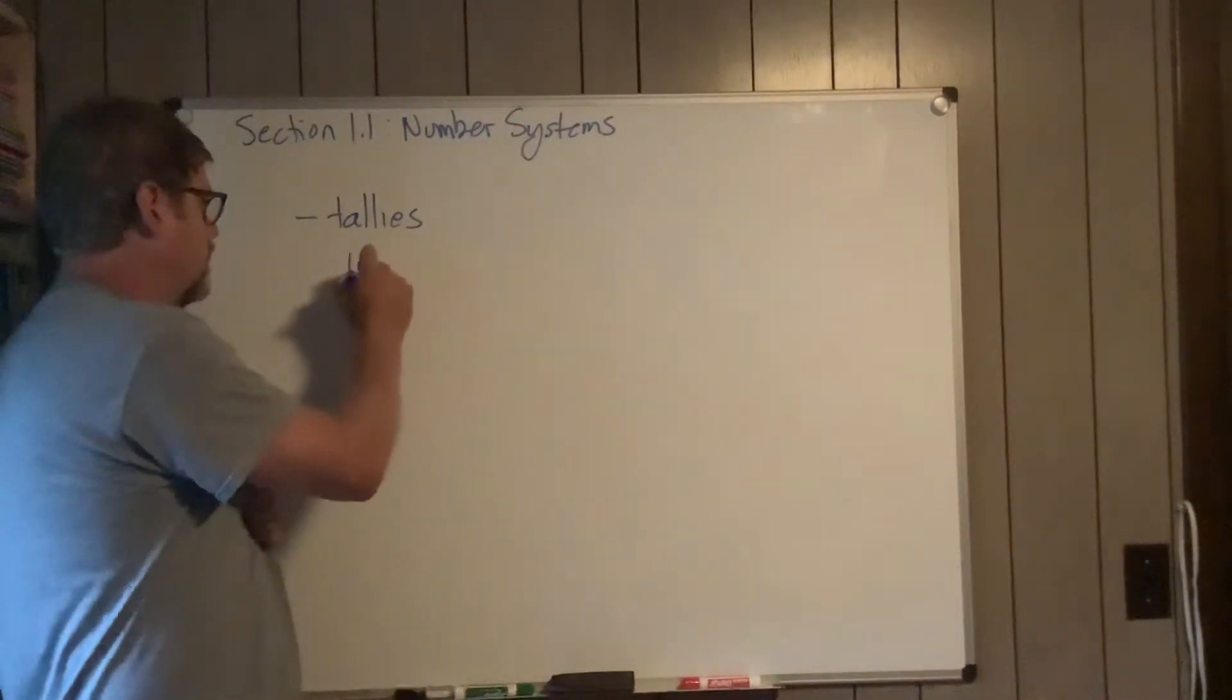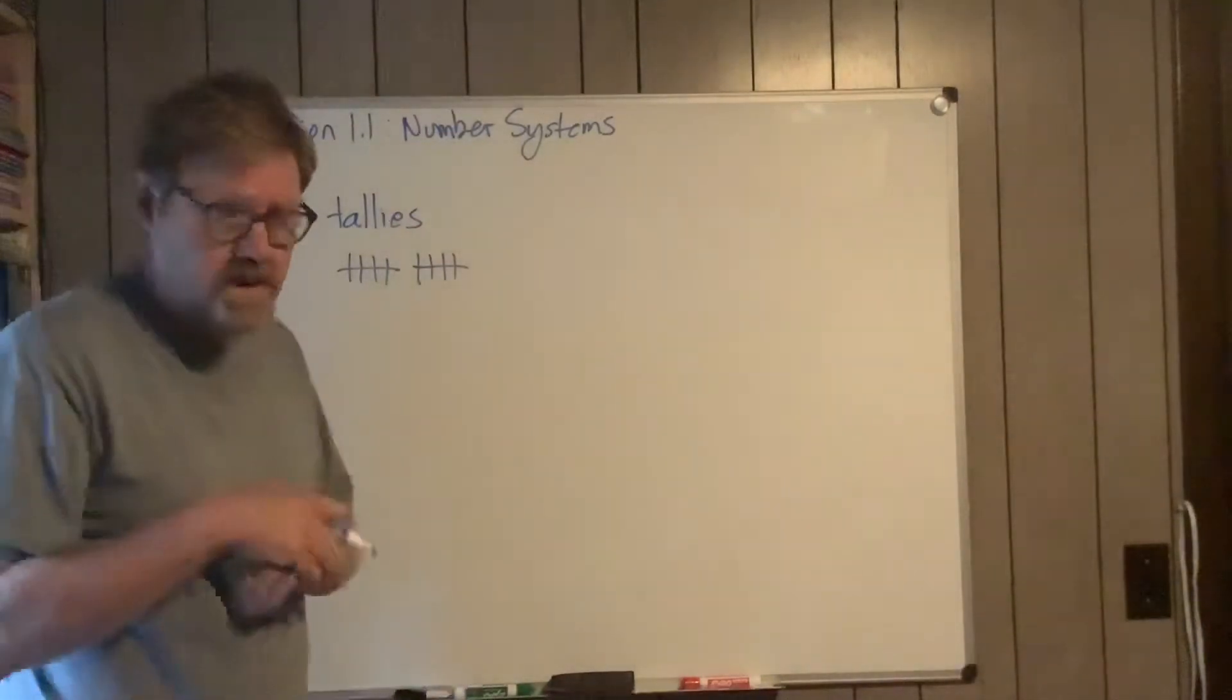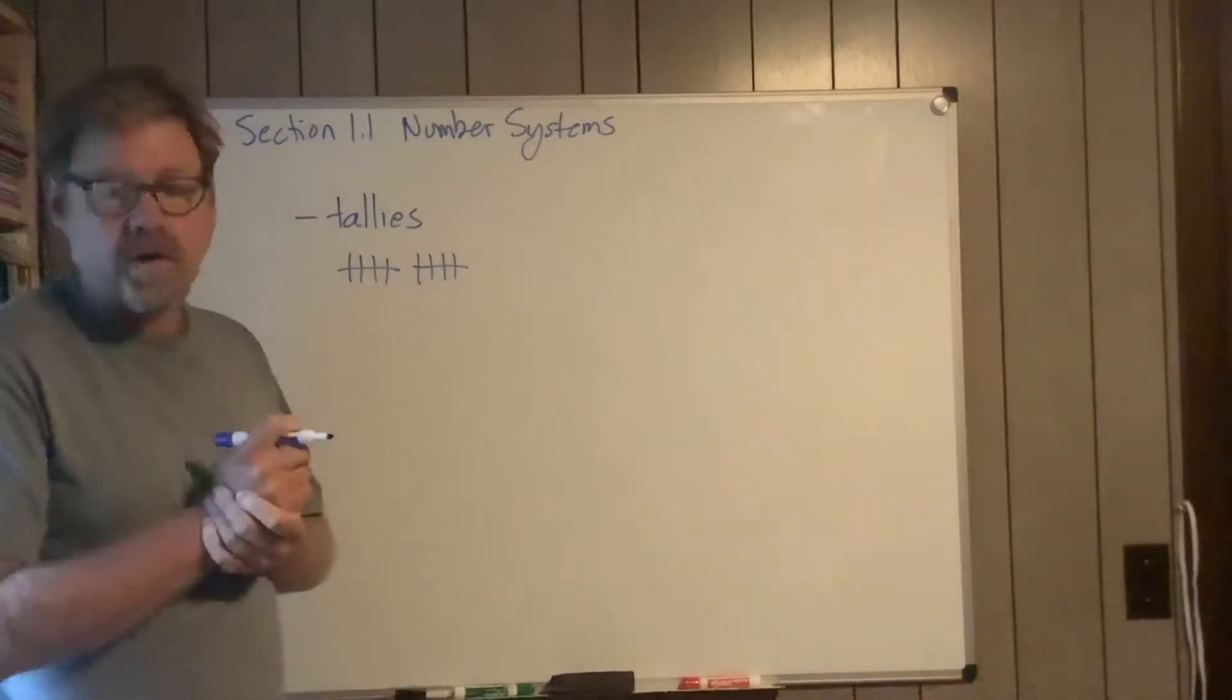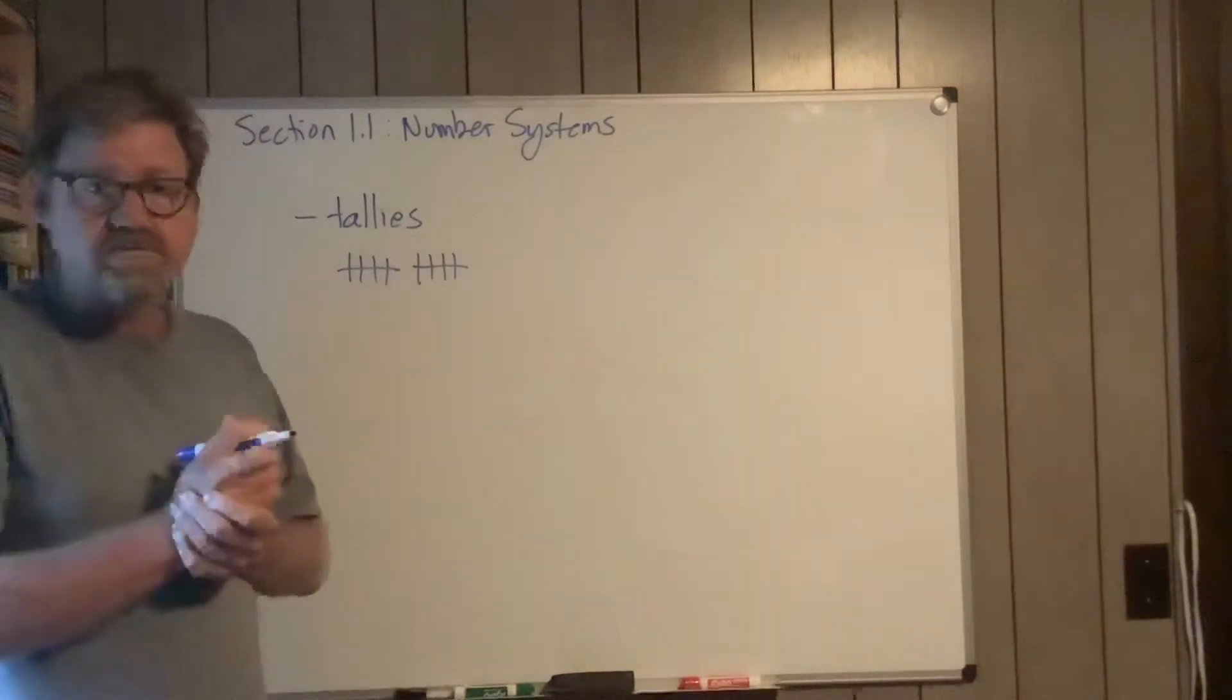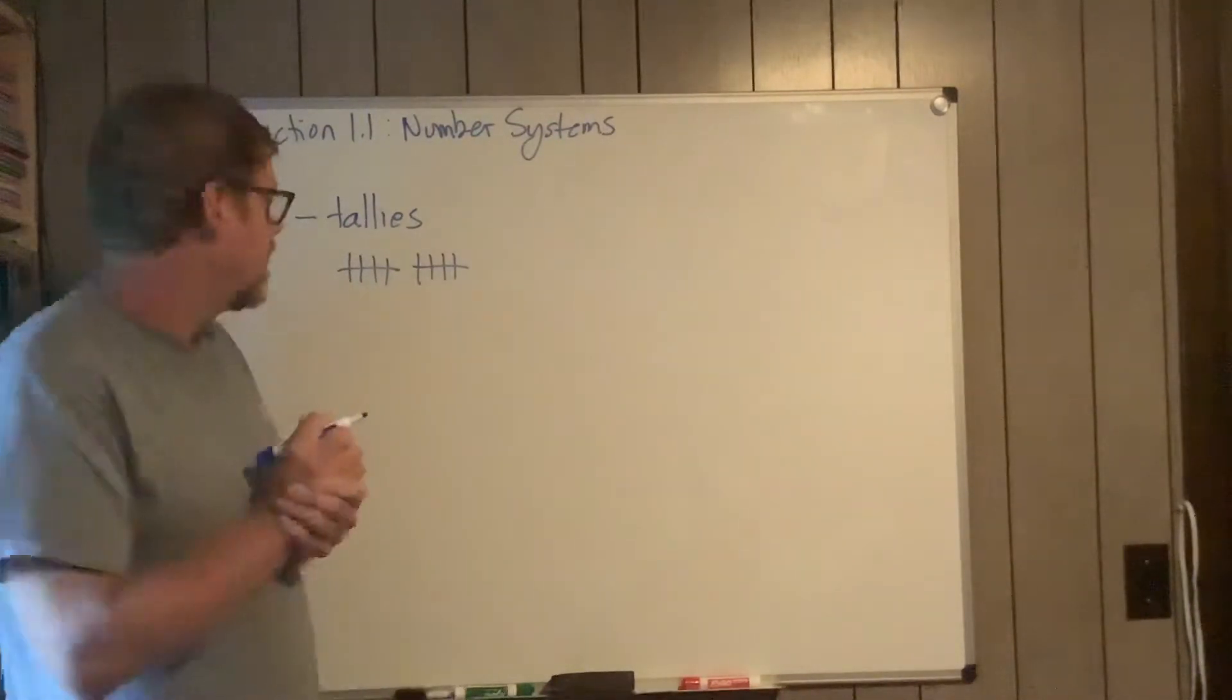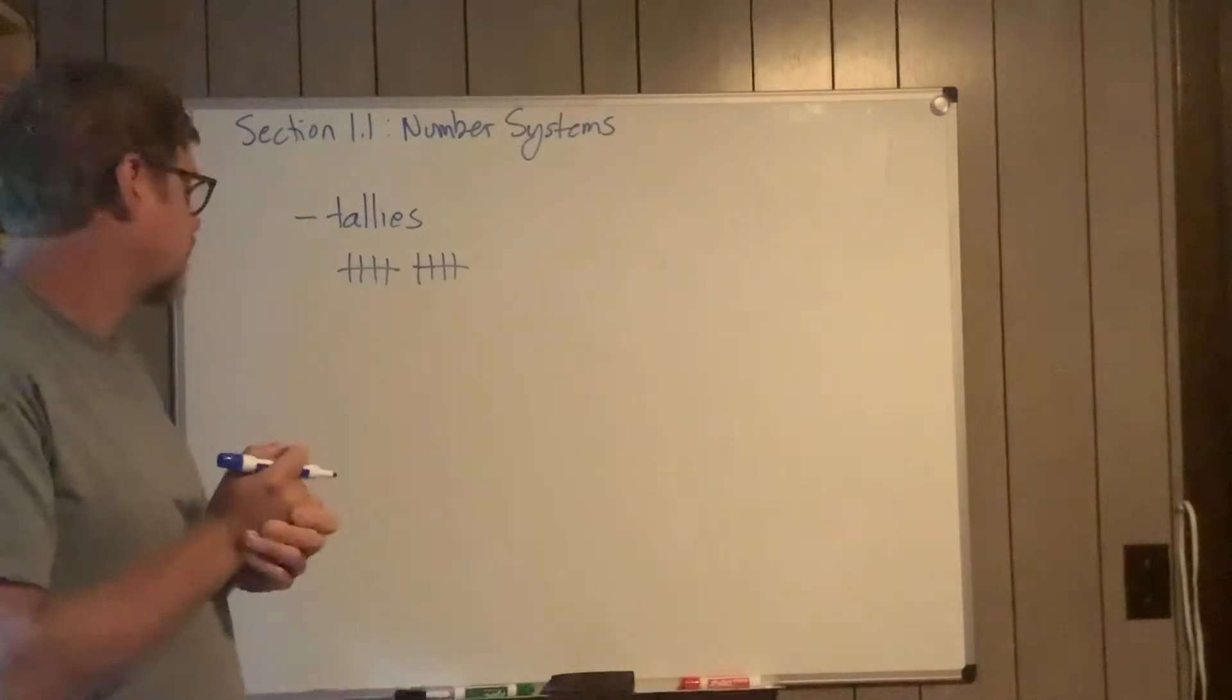which is basically just counting one, two, three, four, five, and so on. It's a visual way of counting things, pretty straightforward for small numbers. If I tried to write down 175 in tallies, not fun. You might use it in little games and so forth.